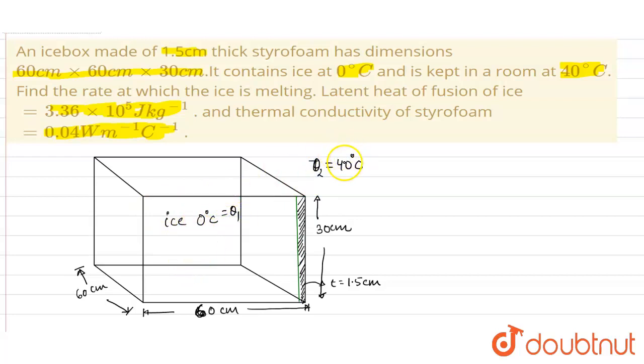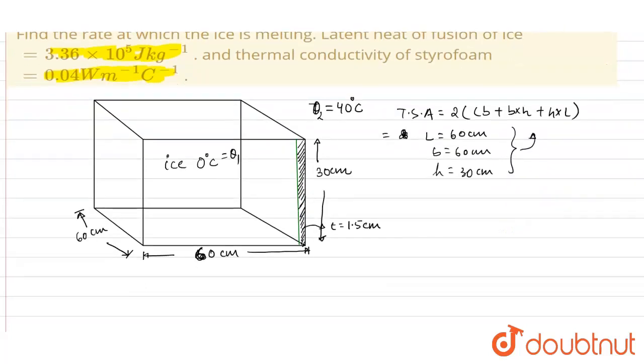Now first of all, calculate the total surface area of this ice box. So the total surface area is given as 2 times (length × breadth + breadth × height + height × length). Length is 60 centimeters, breadth is 60 centimeters, and height is 30 centimeters. Putting these values in the equation, we get the total surface area as 1.44 meter square.